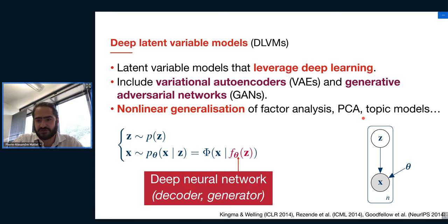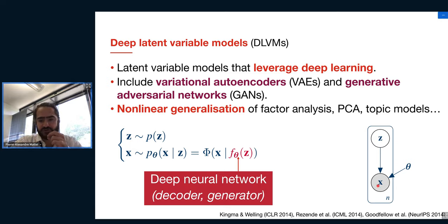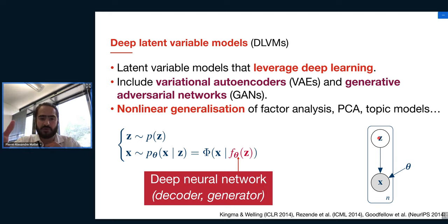The model is written like this: we want to model some data x — which could be an image, a sound, electronic health records, or a molecule — using compact information coded as z. Once you have z, you can generate x by passing z through a function called the decoder, which is a deep neural network. Passing the code through the decoder gives the distribution of our data points, p(x|z), parameterized by that network.